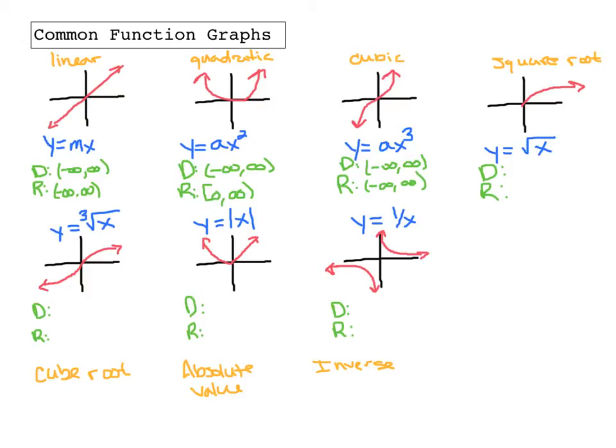Now square root, this is where it starts to get a little iffy. It doesn't go all the way to the left, because it stops right about here, right about when x is zero. So that's going to be our domain. It's going to be zero all the way up to positive infinity. And the range, it doesn't go down all the way, it just goes down to zero, and it goes all the way up to infinity.